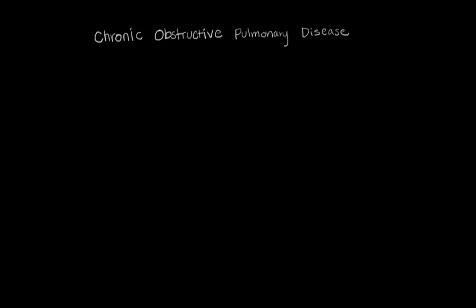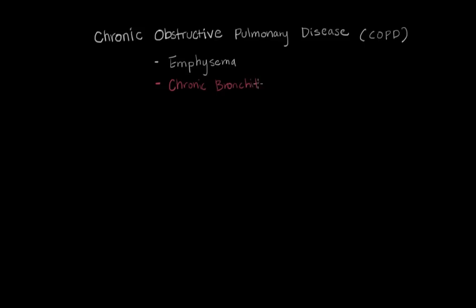There are actually two diseases that fall under the umbrella of chronic obstructive pulmonary disease, which we just call COPD. The first one is emphysema, a disease that has to do with airway collapse due to changes in the structure of the walls. What I'm going to talk about today is the other category, called chronic bronchitis. Both of these are obstructive, meaning air is stuck in the lungs and can't get out, but in chronic bronchitis the culprit is too much mucus — remember that, too much mucus.